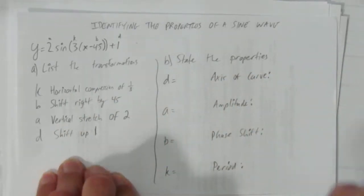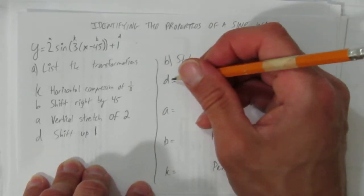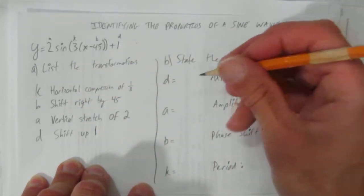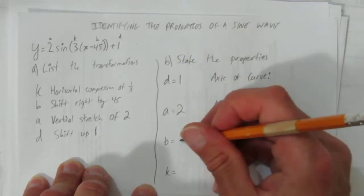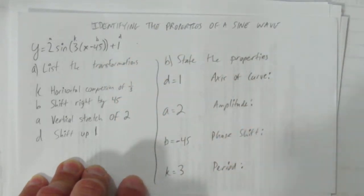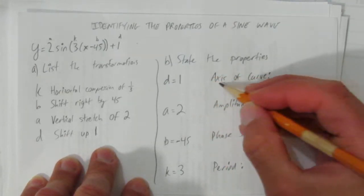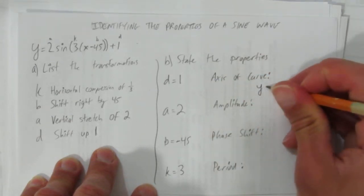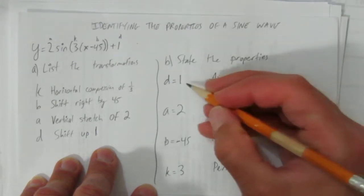Now we're going to state the properties. Let's identify these numbers here. It'll help because people mix them up all the time. Here, it doesn't matter what order you do the properties in. It very much matters for the transformations, not for these properties. So the d is one. The a is two. The b is negative 45. All this b includes the negative. And the k is three. The reason I did them this way, I just like it this way. I like first identifying what's the axis of the curve. That's the middle of the wave. And it's defined by this d value. So the axis of the curve is y equals one. Has to be written as an equation. Make sure you write it y equals whatever the d is.